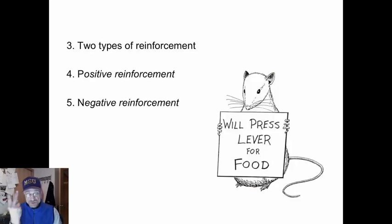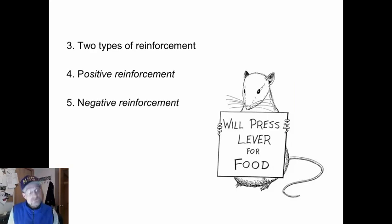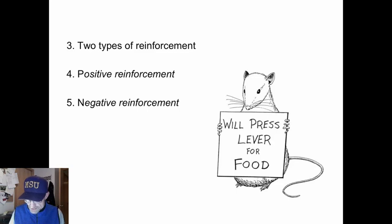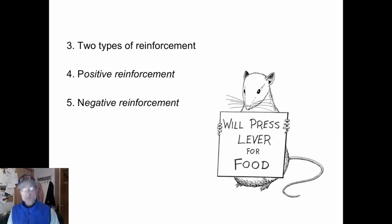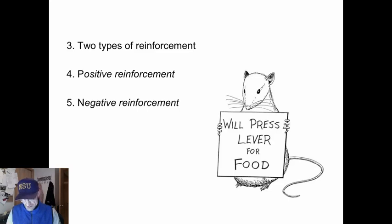There are two types of reinforcement. Positive reinforcement is a reward or a pleasurable thing that is attached to a behavior. If you're a mouse, that would be a tasty mouse pellet. If you are a human being, that would be money, attention, candy, recognition, and so on.